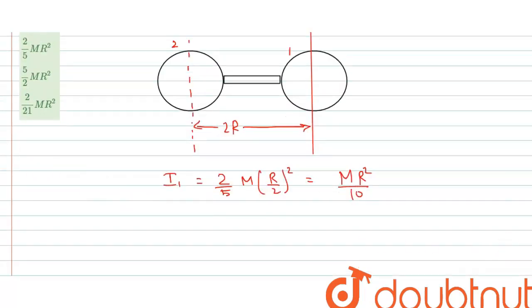So moment of inertia of sphere 2 about the axis passing through the center of sphere 1 equals the moment of inertia about its center of mass, which is 2/5 m(r/2)², plus according to the parallel axis theorem, m times the gap squared, which is 2r squared.